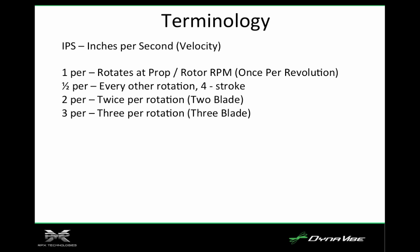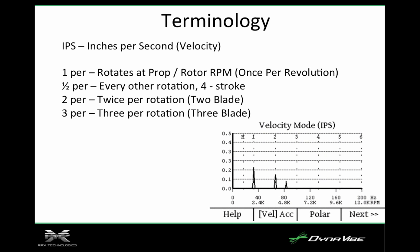I skipped over the half-per, which is actually one of the most interesting vibrations because it gives us an idea of engine health — it specifically tells us how well that engine is running. A half-per vibration is something that occurs every other rotation. For a four-stroke engine, each cylinder fires every other rotation, and because it fires every other, it's called a half-per. The half-per vibration is significant enough that it's given its own position on our spectral chart.